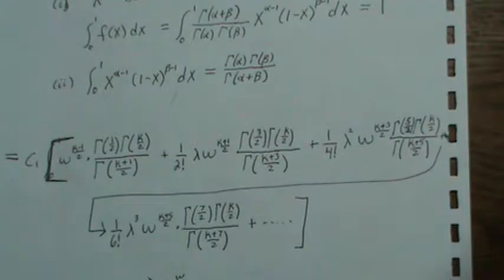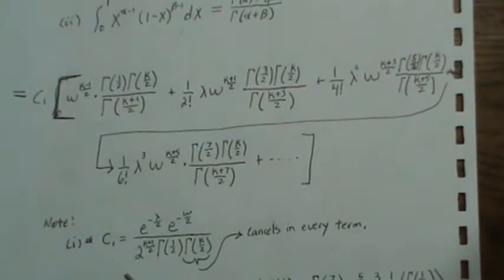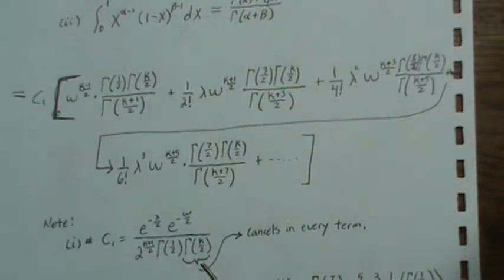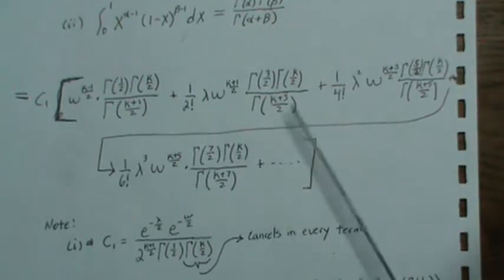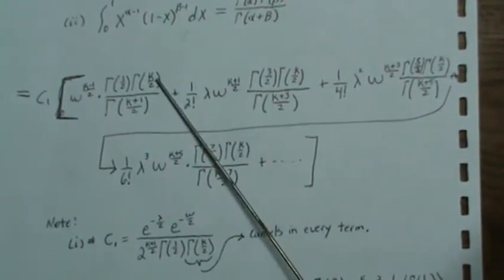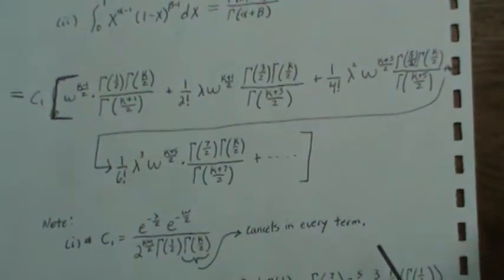So now we need to simplify it even more. Remember that our C1 has a gamma of k over 2 in it in the denominator and each of these terms have a gamma of k over 2 so those will cancel.